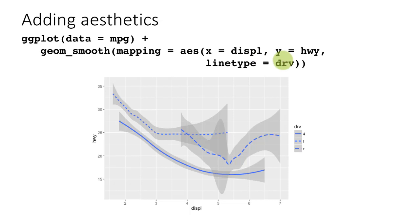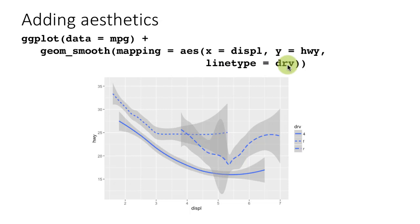The applicable aesthetics depend upon the geom. It is quite possible to pass an argument to the AES function that is not valid for the specified geom. For example, if there was an aesthetic like shape which is not applicable to geom_smooth, ggplot will simply ignore it, because that is an inapplicable aesthetic for that geom. It will give you a warning message saying this thing was ignored — it's not going to generate an error.